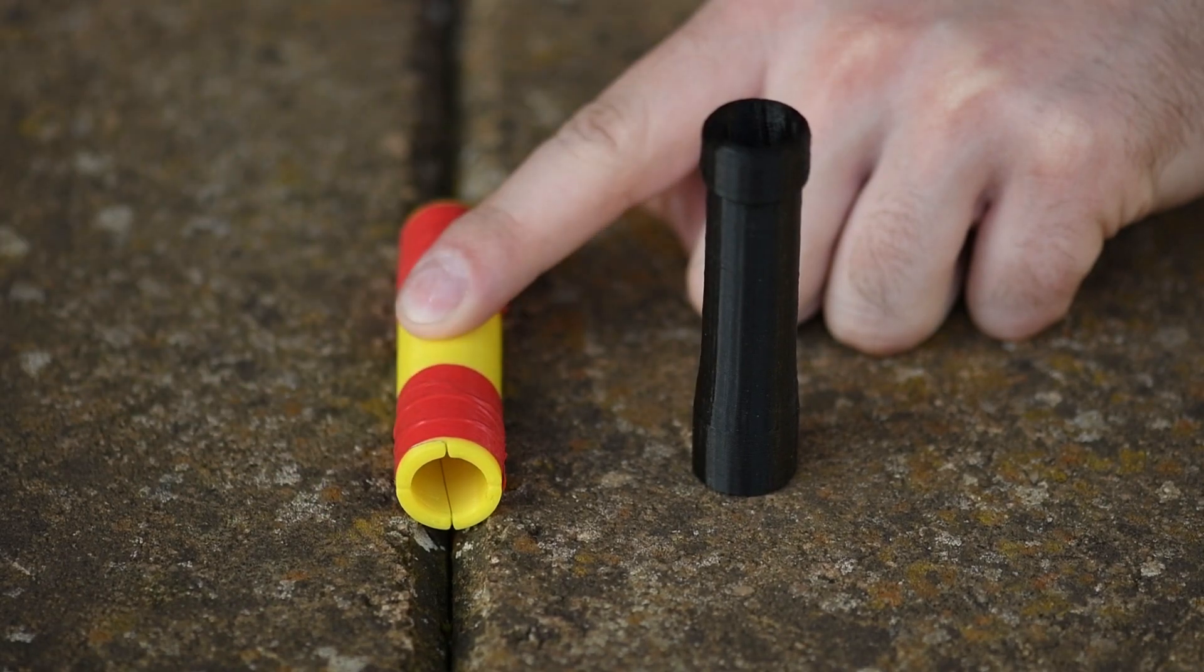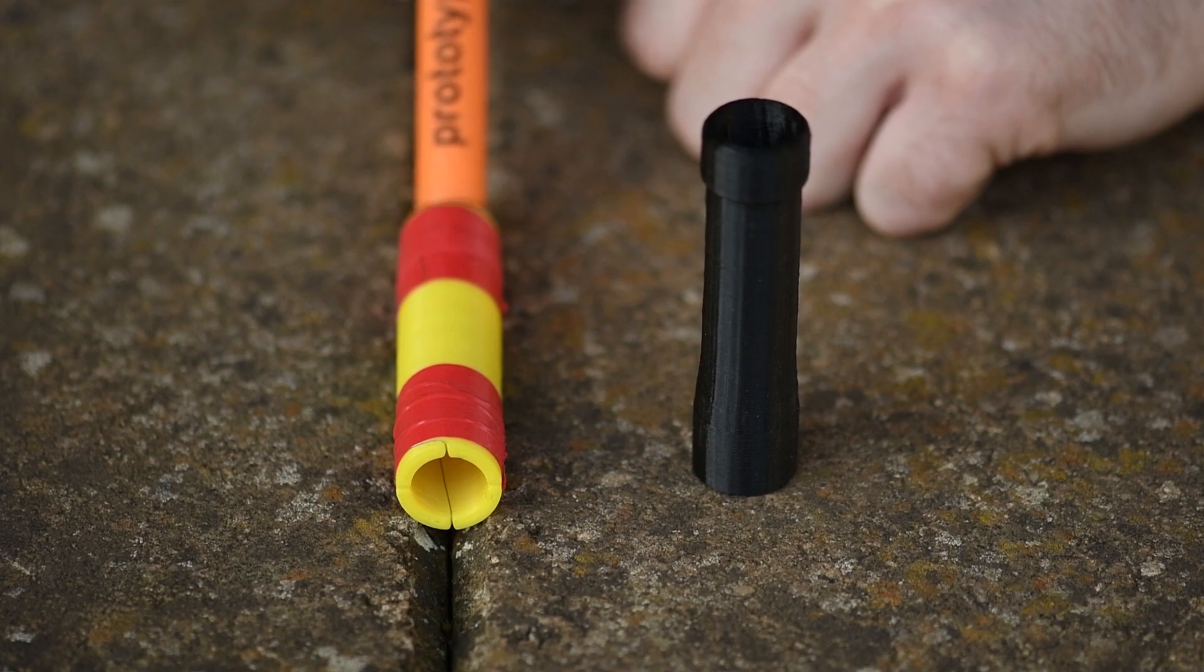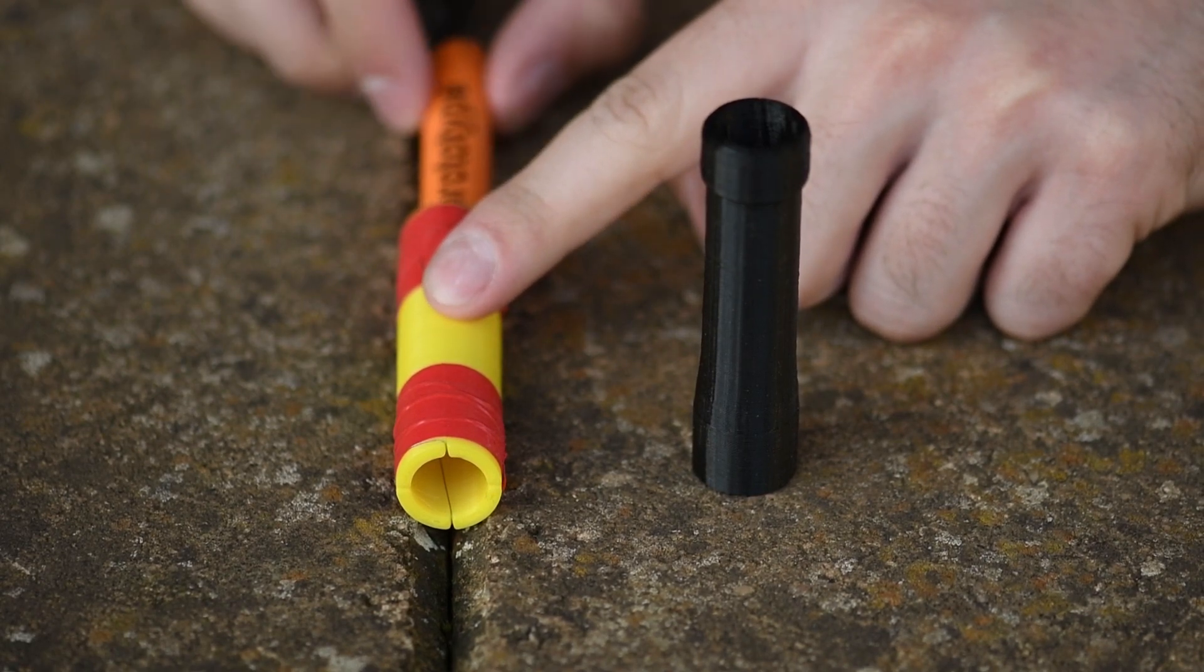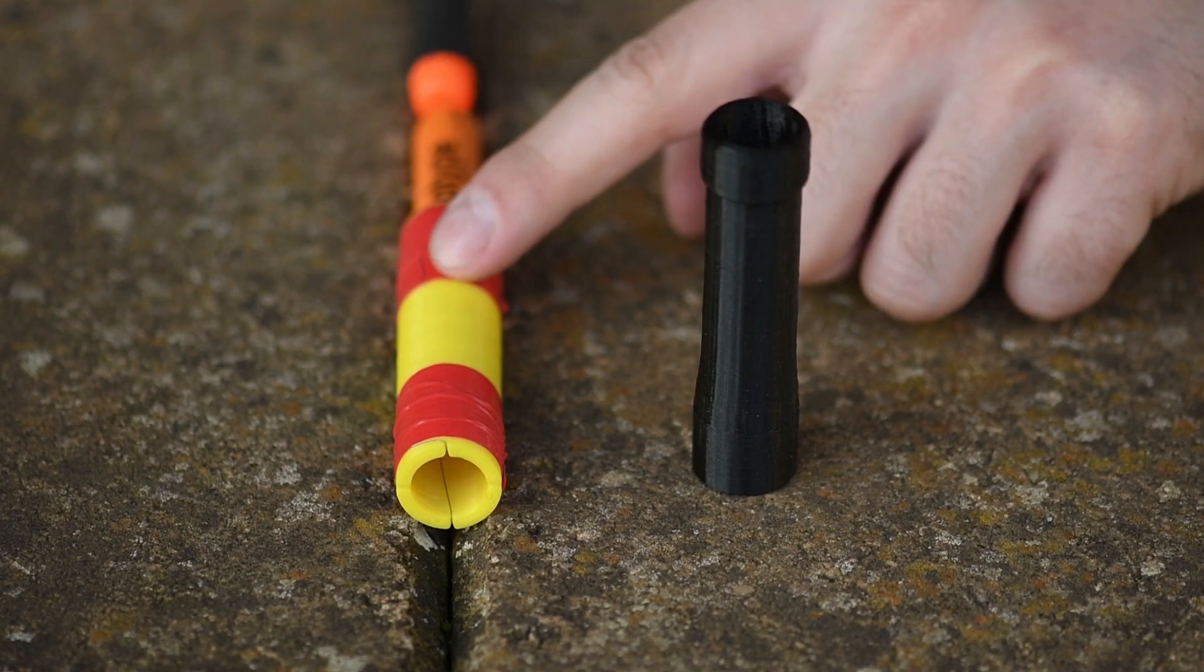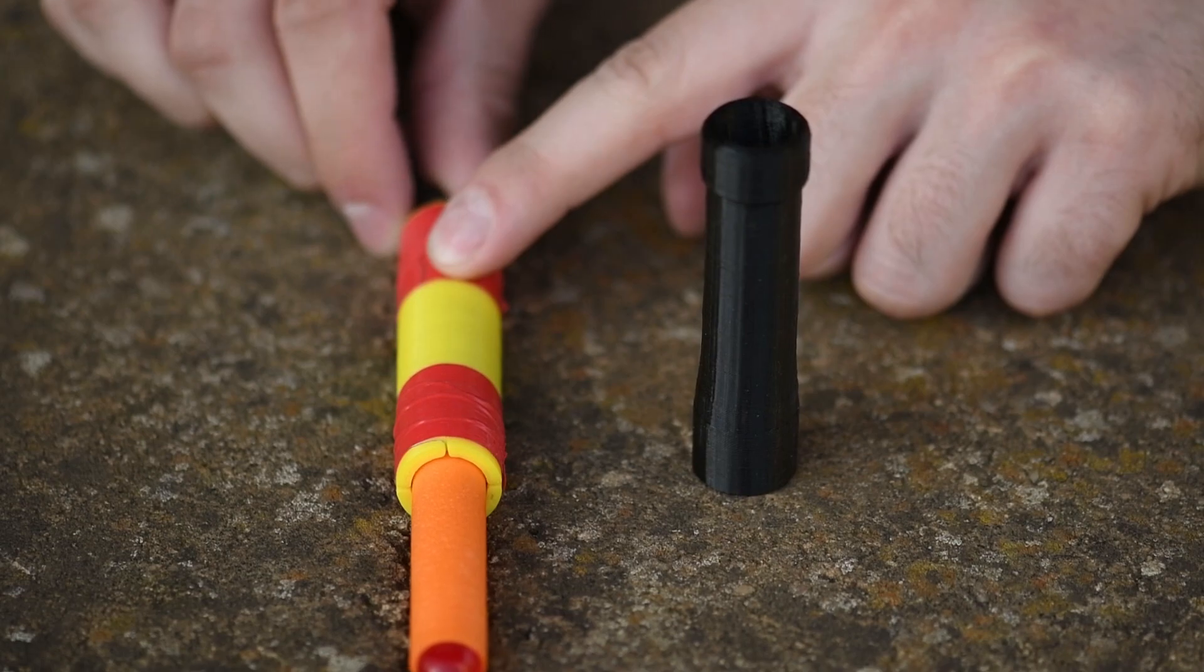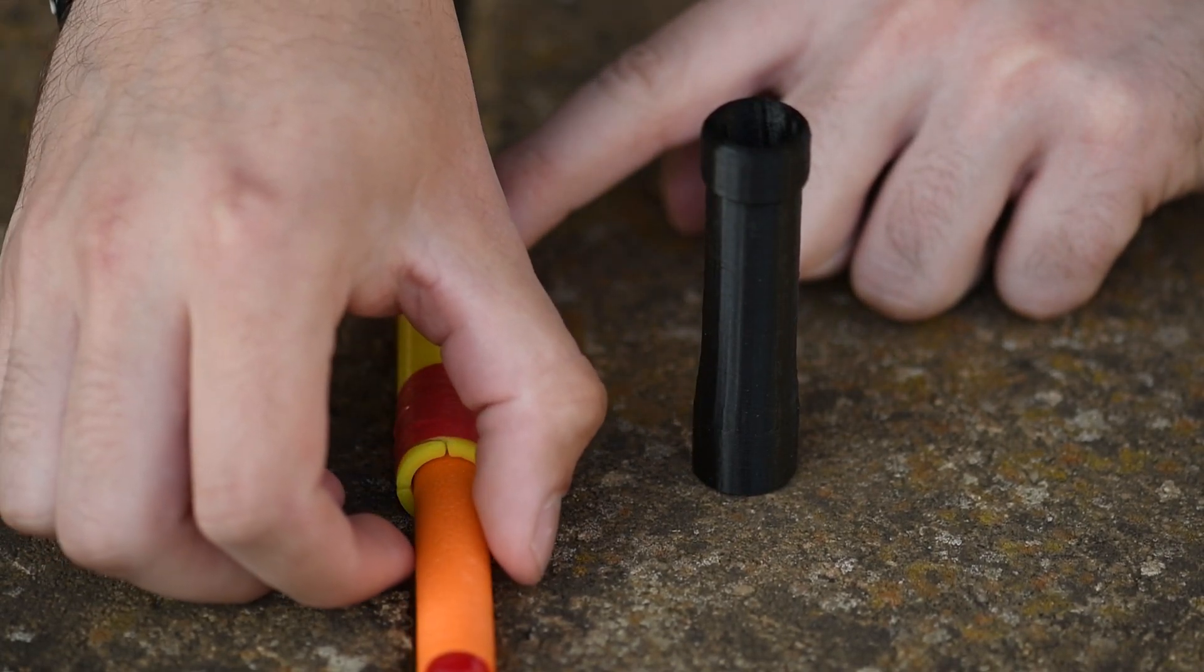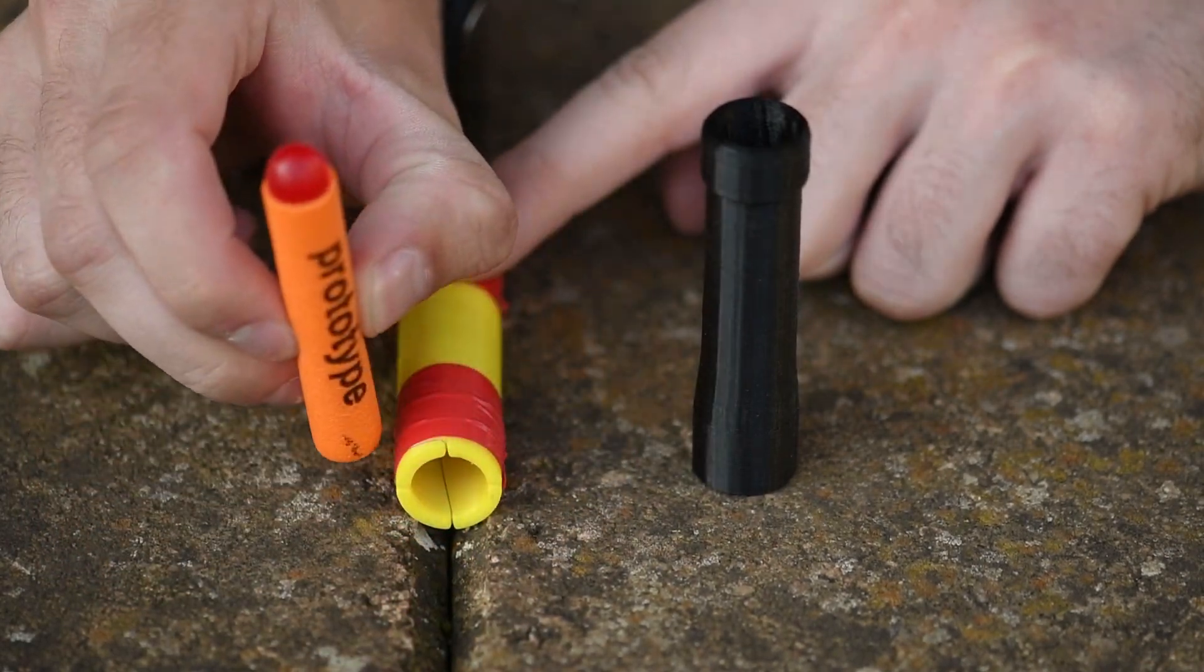Now that was the loose fitting elite dart, now I'll try the tighter fitting prototype ACC dart. I'm positioning the words prototype up to the top and as I push this through you can see it's rotated a little further than 180 degrees, more like 200 degrees.